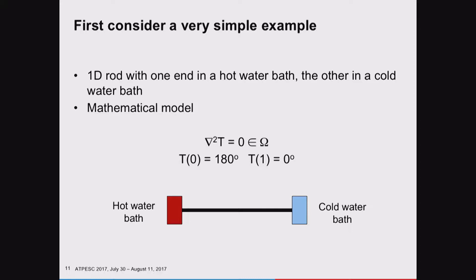How is that represented mathematically? It's represented with the diffusion operator—a Laplacian, the upside-down triangle squared. T is our temperature. The equation is: the Laplacian of T equals zero on our domain omega. At x equals zero, we have a hot water bath of 180 degrees. At x equals one, we have a cold water bath at zero degrees.